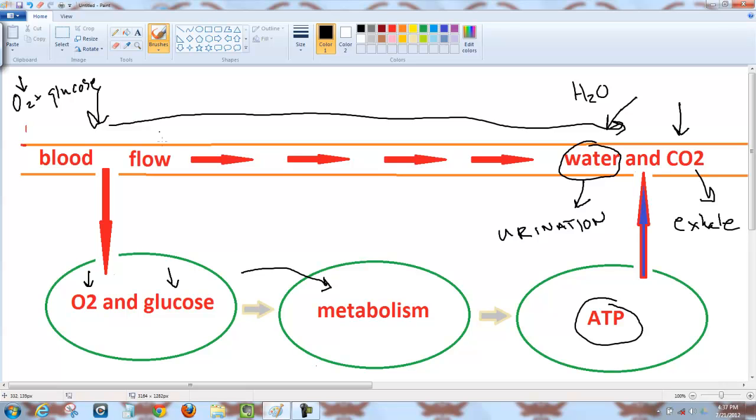So again, the key thing to keep in mind here is blood flow is necessary for cells to survive because blood flow drops off oxygen from the lungs and glucose that comes from breaking down the food that you eat. It's delivered by the blood. The cells, through a process called metabolism, turn O2 and glucose into ATP, water, and CO2.